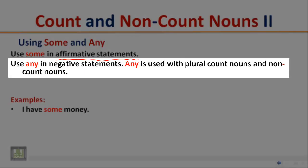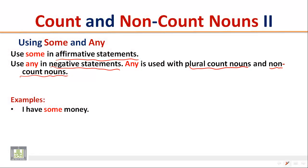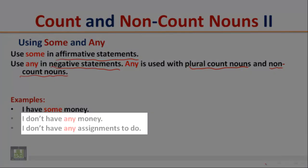Use any in negative statements. Any is used with plural count nouns and non-count nouns. Examples: I don't have any money. In this example, the word any is used with a non-count noun and the sentence is negative.